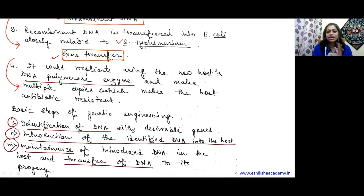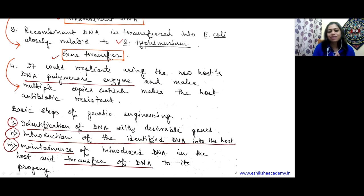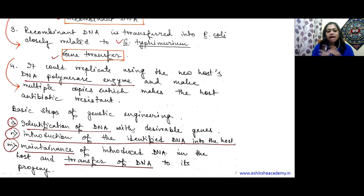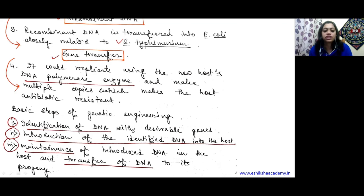So these three are very, very important steps: first, identification of DNA with desirable genes; second, introduction of identified DNA into the host; and third, maintenance of the introduced DNA in the host and transfer of DNA towards progeny. These three steps summarize the entire concept of genetic engineering as covered in this chapter.